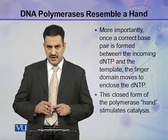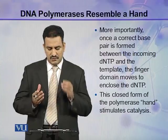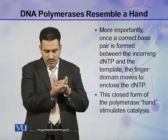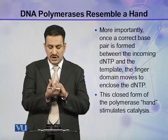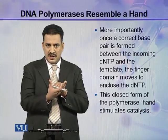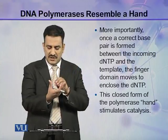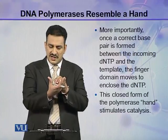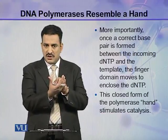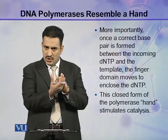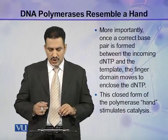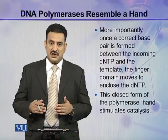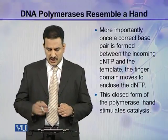Once a correct base pair is formed between the incoming dNTP and the template, the finger domain moves to enclose the dNTP. Initially the finger domain is open, but when a correct dNTP comes and makes a base pair with the existing template nucleotide, the finger domain moves and encloses the dNTP. This closed form of the polymerase hand stimulates catalysis, and then the nucleophilic attack starts and catalysis proceeds.